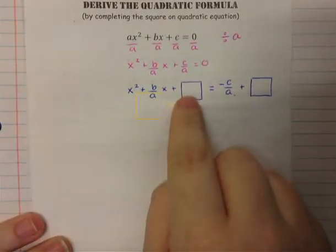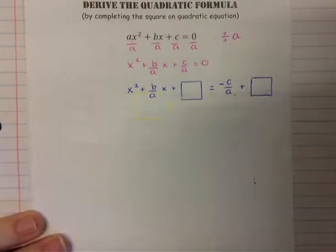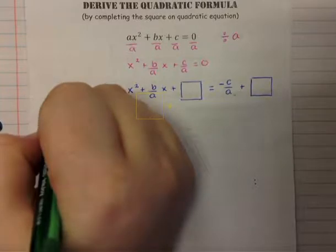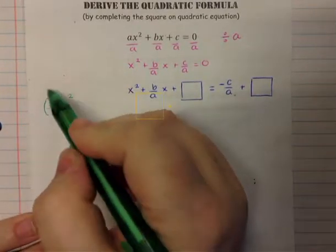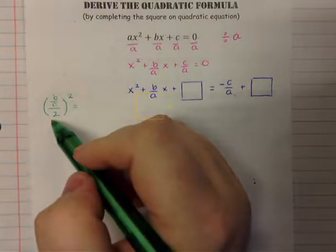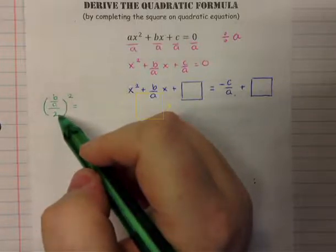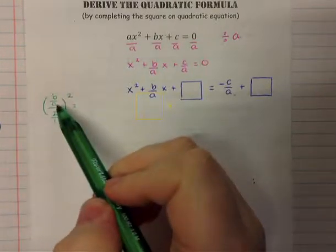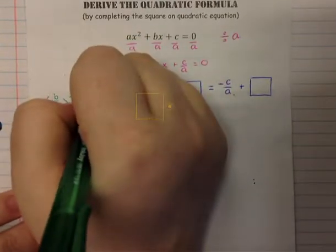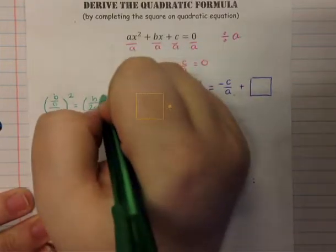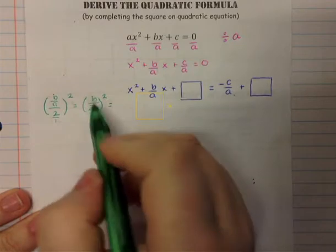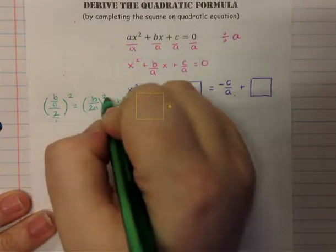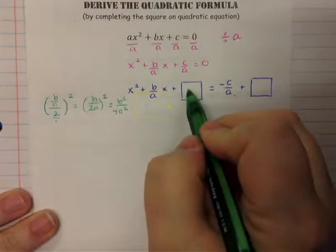To fill in the box, we take half of the b term and square it. Our b term here is b/a. Half of b/a is b/a × 1/2, which equals b/2a. Then we square it: (b/2a)² = b²/4a², because squaring the numerator and denominator gives b² over 2a squared, which is 4a². That value goes into both sides.